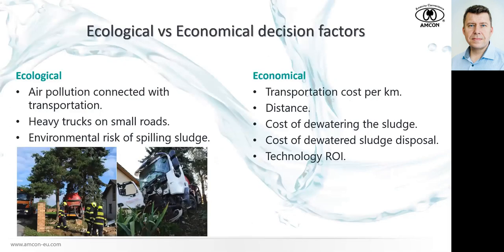When promoting decentralized sludge dewatering, we talk about ecological and economical factors. Ecologically, shipping sludge will definitely pollute the air around communities, villages, and cities. Heavy trucks on small roads, plus the environmental risk of accidents and sludge spills — it's not a good thing. To be honest, most people are aware of these arguments, but the question is whether they're really part of the decision-making process. Some countries are very sensitive to ecological factors; in others, not so much.